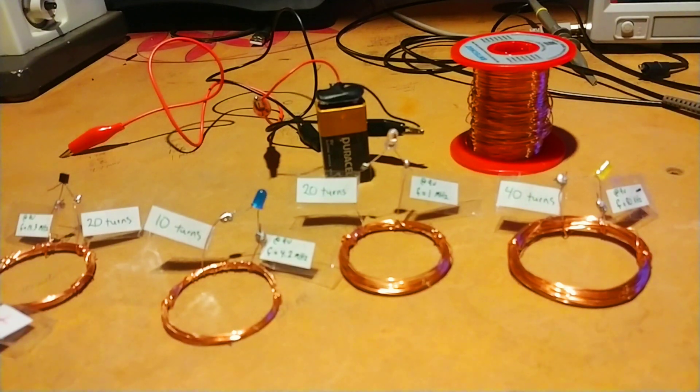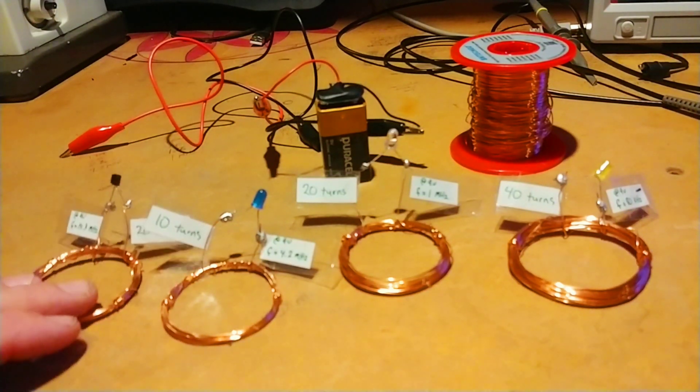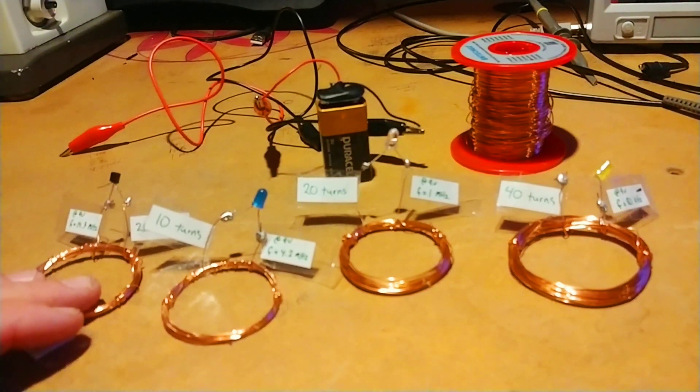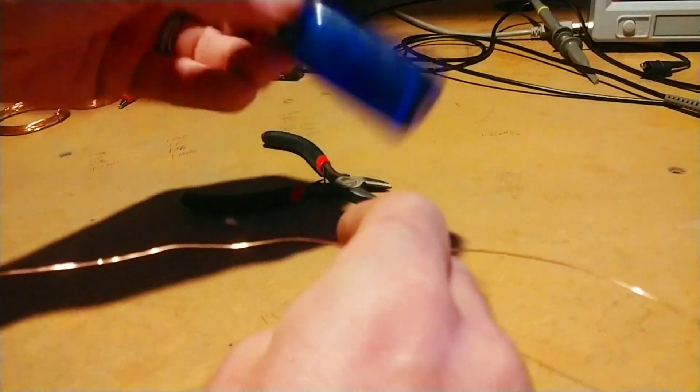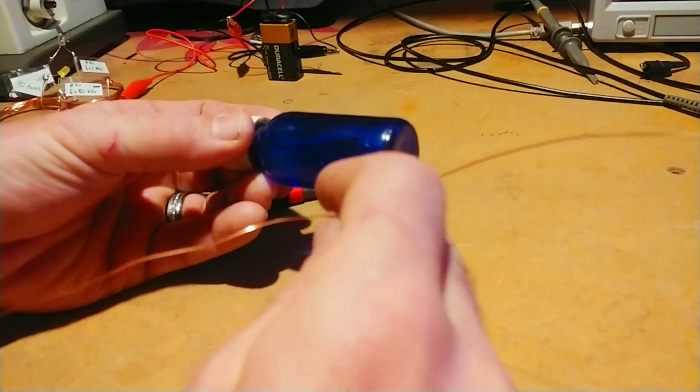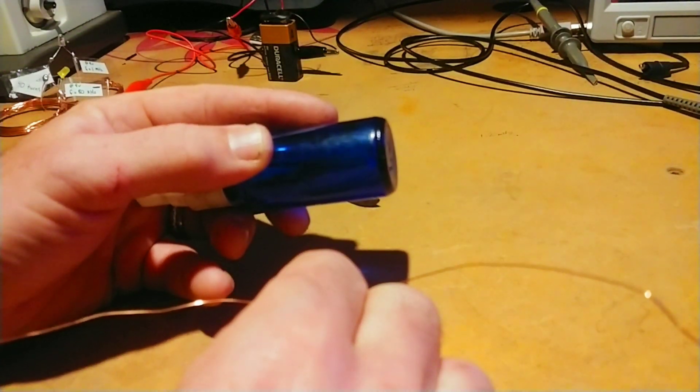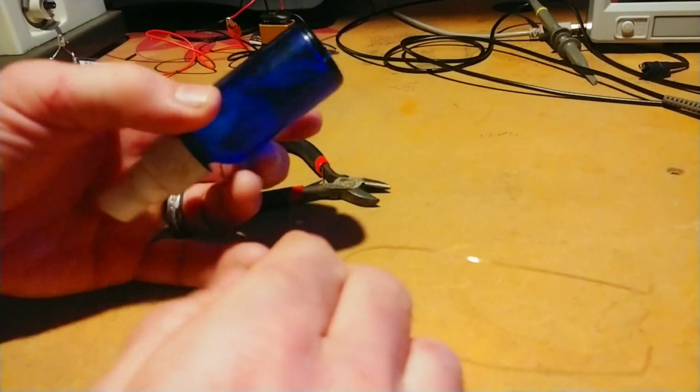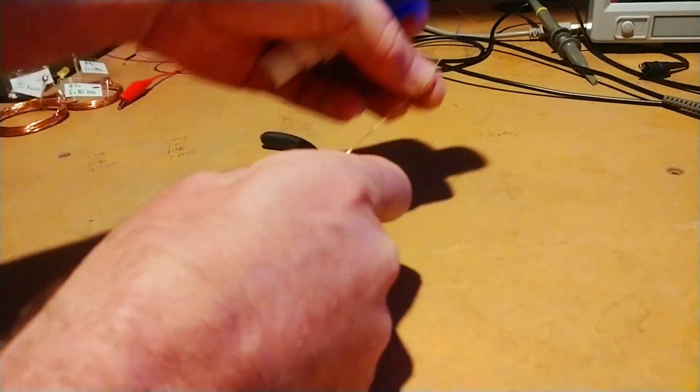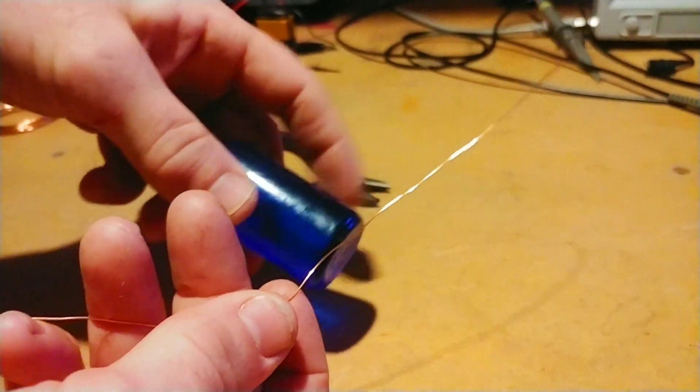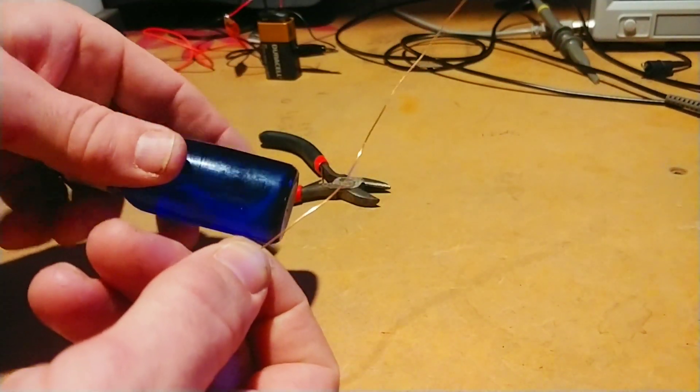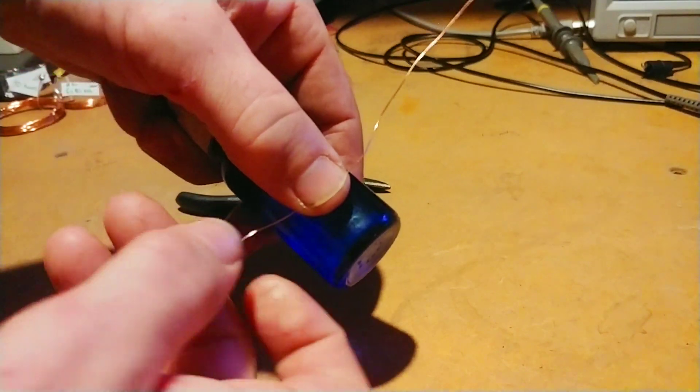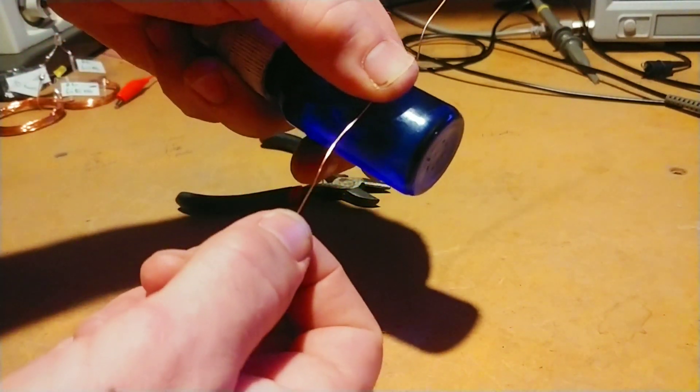First thing I'm going to do is show you how to actually wind a coil. You need to find a circular object. You want to make your transmitter coil and your receiving coils the same size. Take your magnet wire and make sure to leave maybe 6 to 8 inches extra so you have some extra wire to work with.